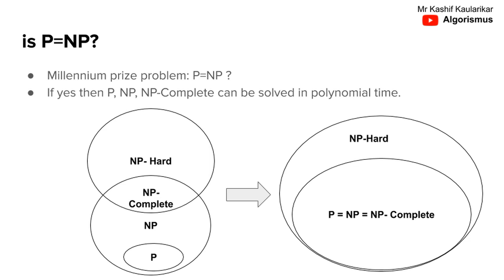The million dollar question, also called the millennium prize problem, is whether P is indeed equal to NP. If it's proven, then one can say NP or NP-complete problems can be solved in polynomial time.